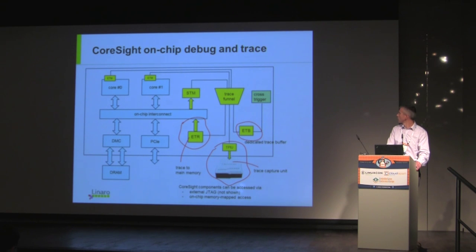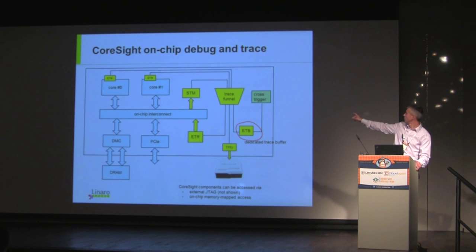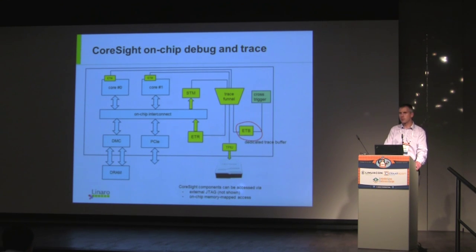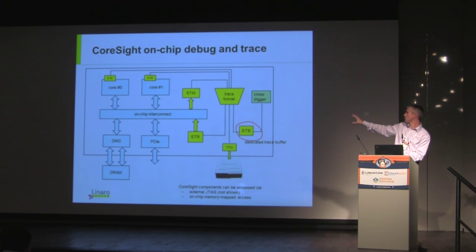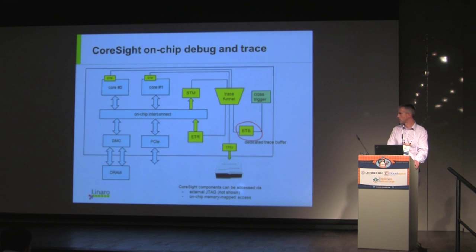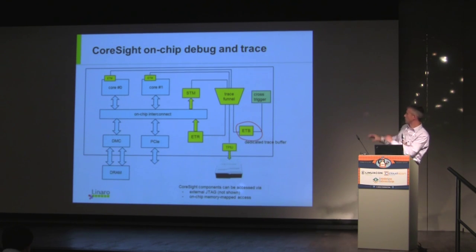We also have something called an STM — Software Trace Macrocell — which slaves off the main interconnect, acts as a peripheral, and allows you to inject trace into the main trace subsystem. So that's our system for collecting trace.